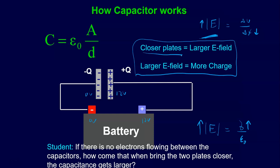A student asks: if no electrons are flowing between the capacitor plates, how come when we bring the two plates closer, the capacitance gets larger? When I bring them closer, the battery will move charge around in order to maintain the voltage difference - so you'd be temporarily changing the voltage difference, and then charge will move around to restore it. It's important to know these rules but also to understand where they come from, because they can be tricky.